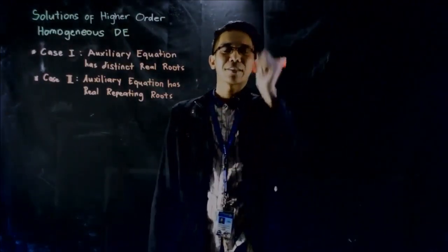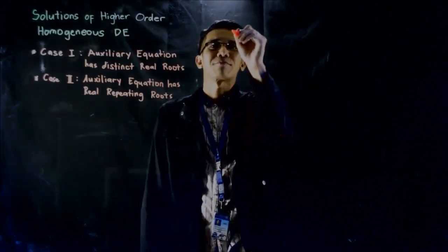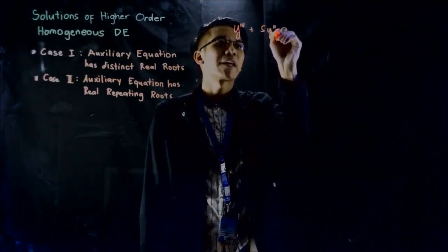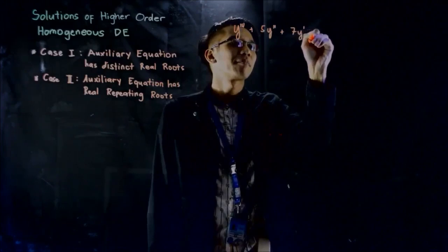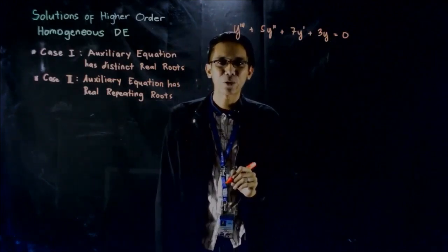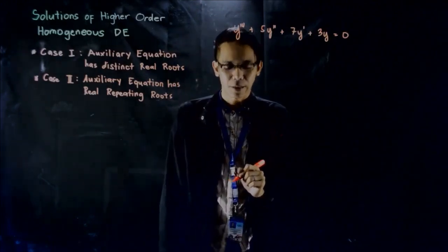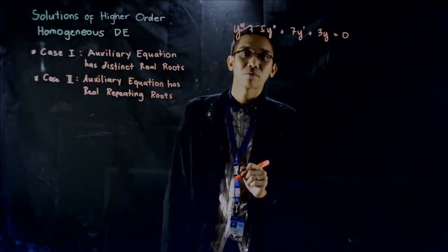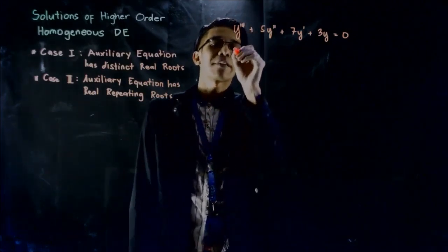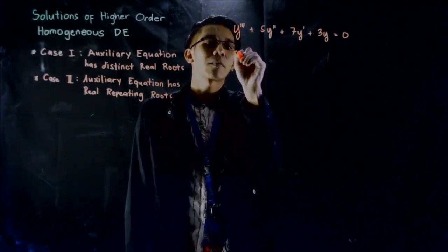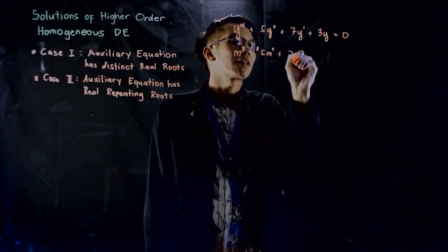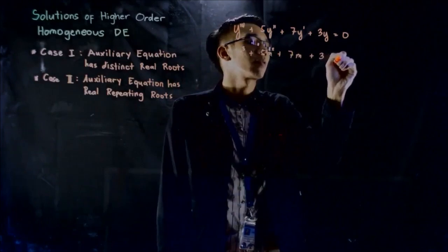Now let's solve this third-order differential equation: y triple prime plus 5y double prime plus 7y prime plus 3y equals 0. We find the auxiliary equation corresponding to the given differential equation, which is m cubed plus 5m squared plus 7m plus 3 equals 0.